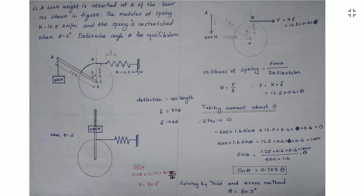Substituting, the spring force equals K times δ, which is 12.5 times 0.6 times θ. We have now found both forces: the weight of 400 N and the spring force. Our aim is to find the value of θ, so we take moments about point O.